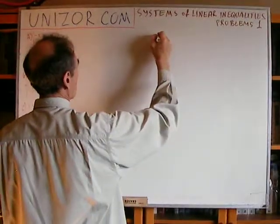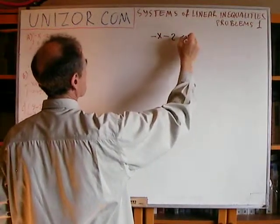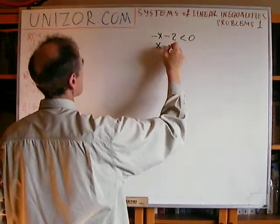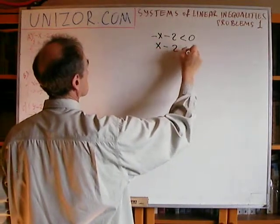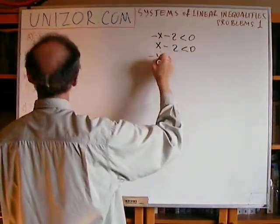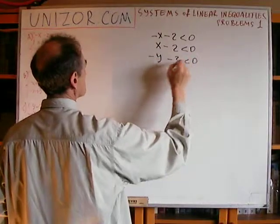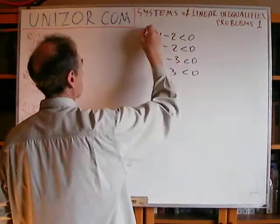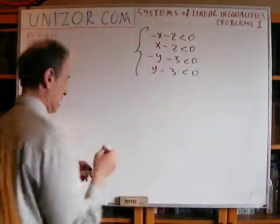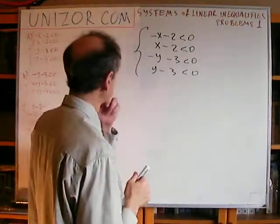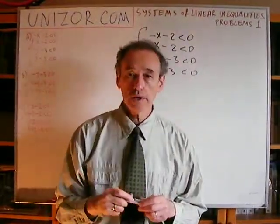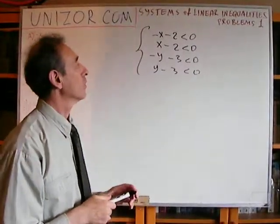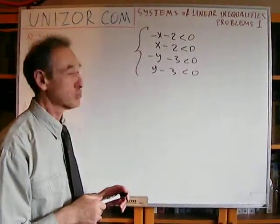First system: minus x minus 2 less than 0, x minus 2 less than 0, minus y minus 3 less than 0, y minus 3 less than 0. So this is a system of four linear inequalities with two variables.